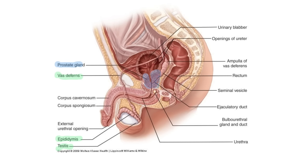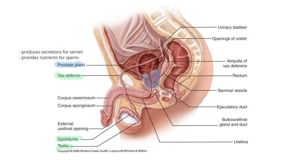The prostate gland sits around the top end of the urethra and has the important function of producing secretions used in semen. That secretion is filled with nutrients for sperm cells, because sperm have a really long journey — all the way across the uterus to the fallopian tubes. They need a lot of energy for the mitochondria in their neck piece, and the energy they require is glucose, which comes in the form of nutrients from the prostate gland.